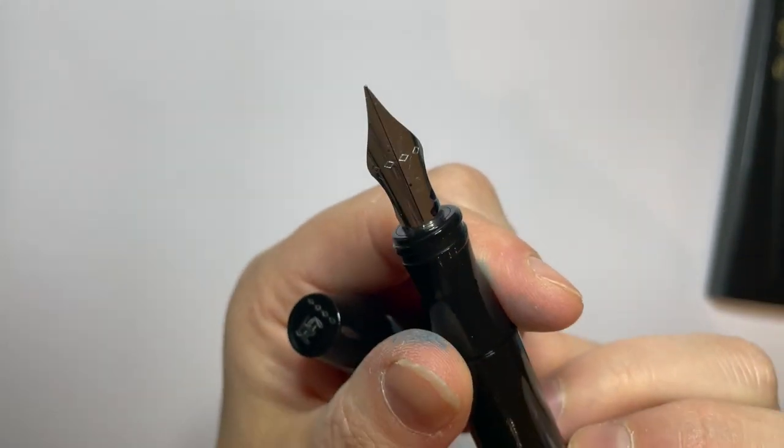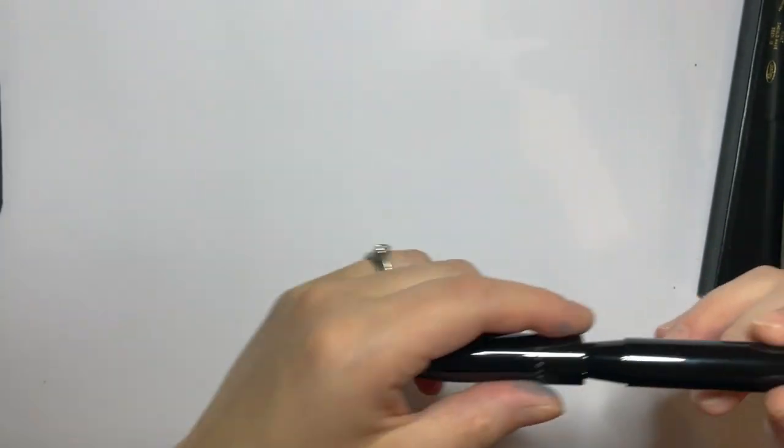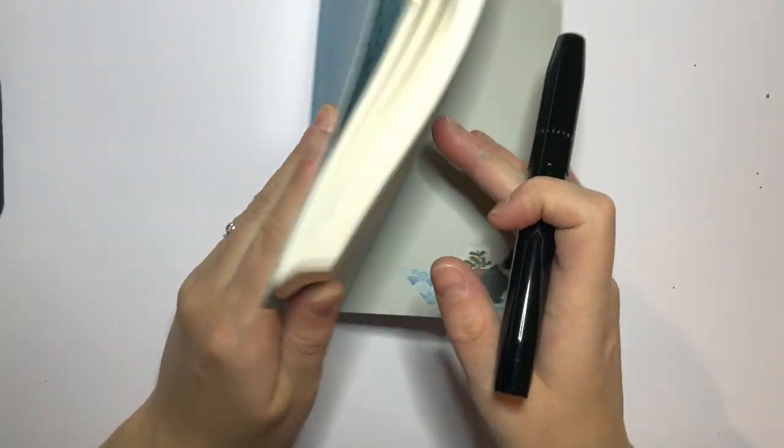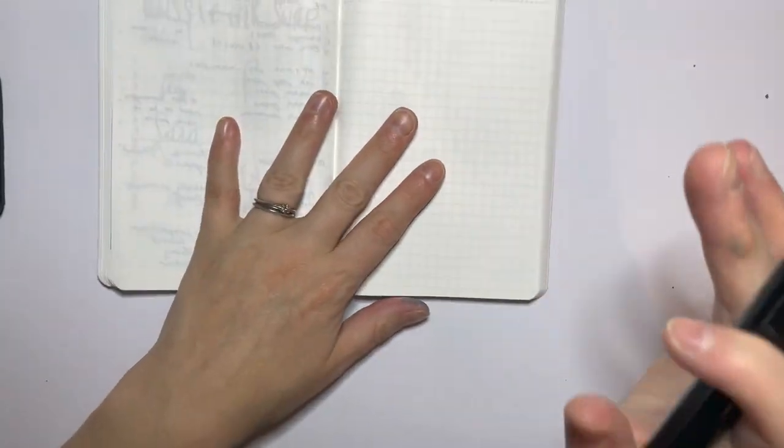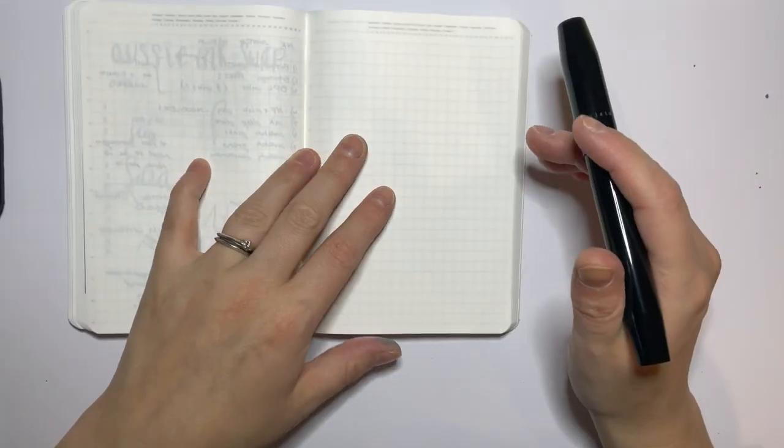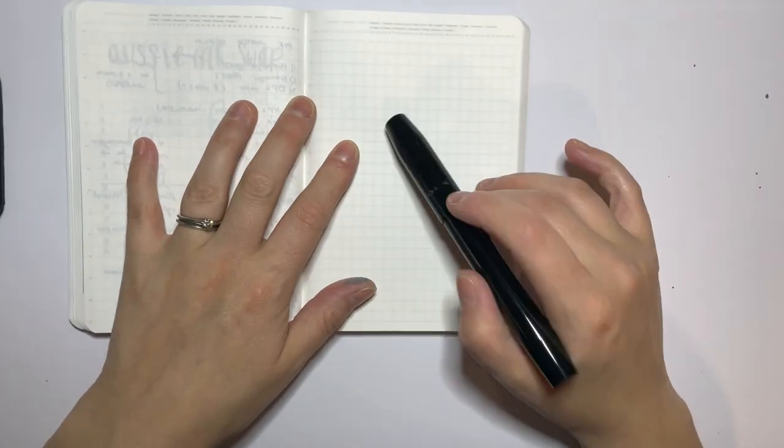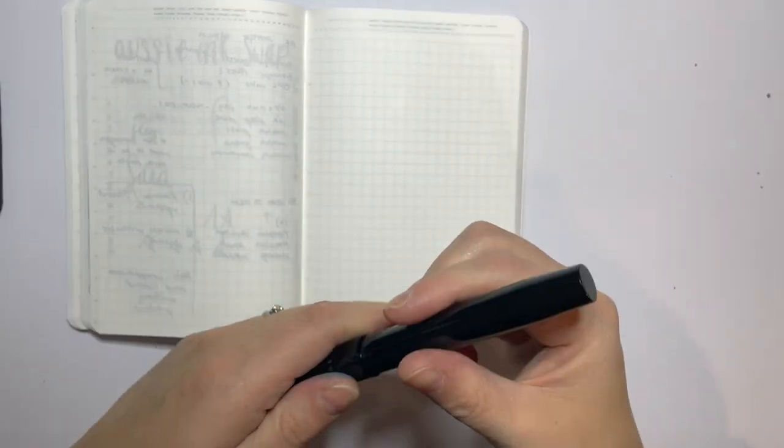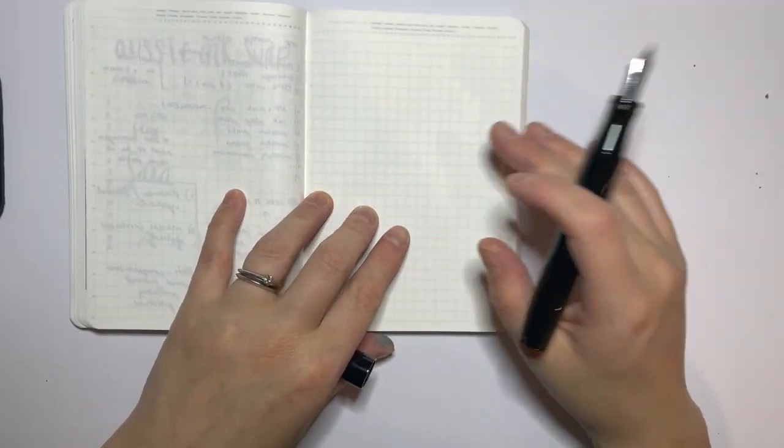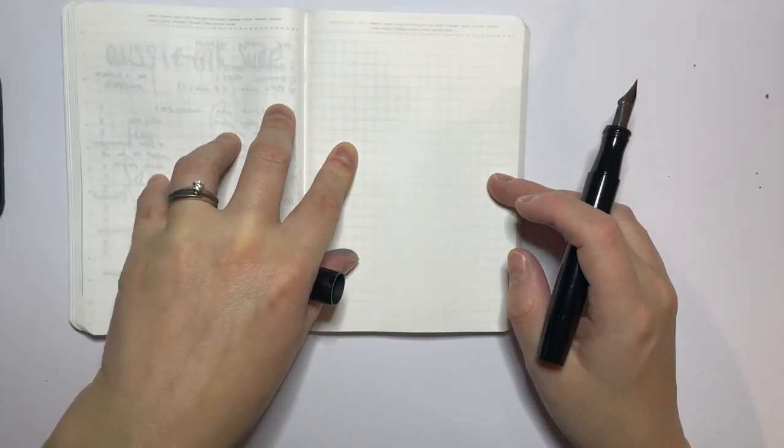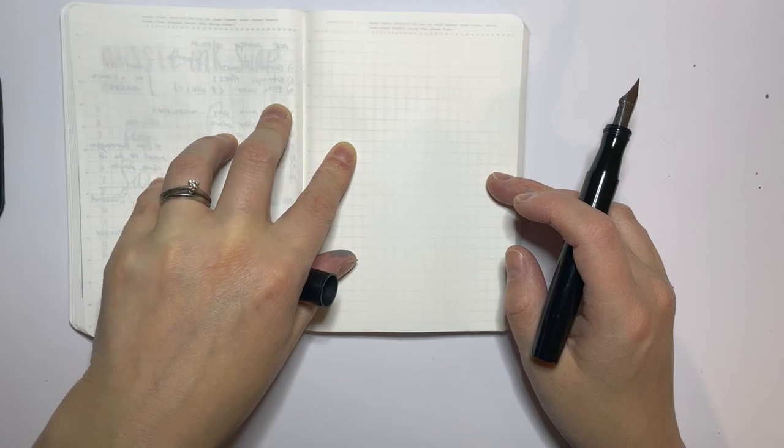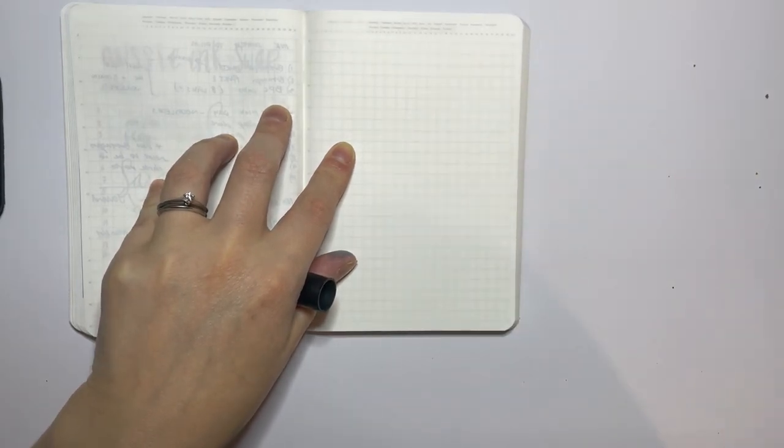Let's do a writing sample. This is currently inked with Robert Oster Muddy Crown. Just open up to a page here. I only have my Stalogy with me today, and so I do think we'll get some feathering, because anything with flex on this paper just feathers like crazy, which is okay.